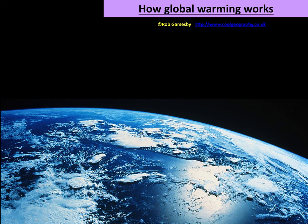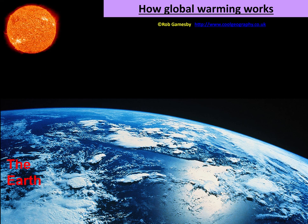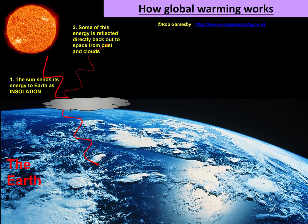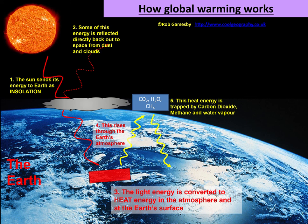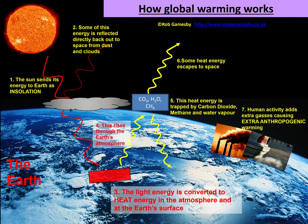You might think: what's the problem? It's all to do with how global warming works like a greenhouse. The sun sends its energy to the Earth as insolation; some is reflected back to space off our atmosphere, clouds and dust. Light energy is converted to heat energy at the Earth's surface, which rises through the atmosphere, and greenhouse gases — methane, water vapour, carbon dioxide — trap that heat energy. A little more escapes to space. All of that is natural until we get to stage seven, where human activities release extra anthropogenic warming.